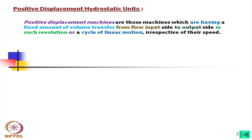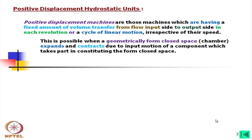Assuming no leakage, this is possible when a geometrically formed closed space chamber expands and contracts due to the input motion of a component which takes part in constituting the formed closed space.